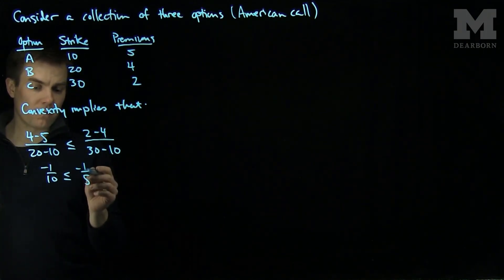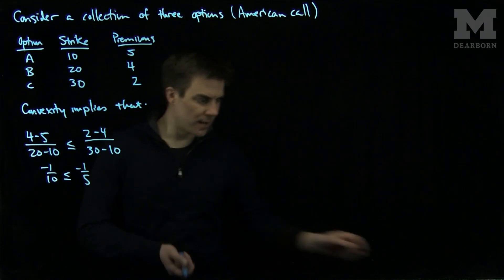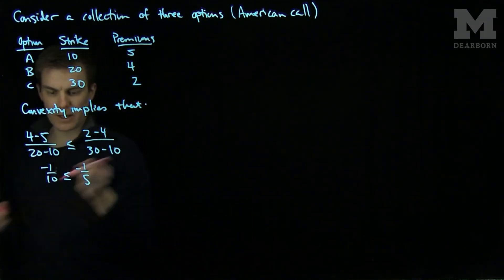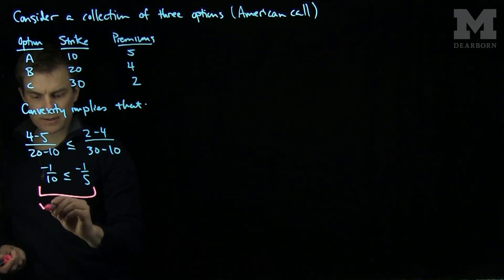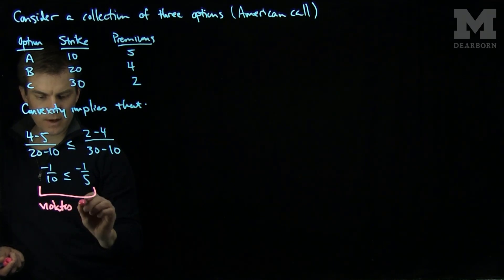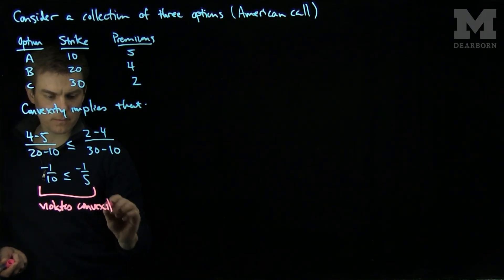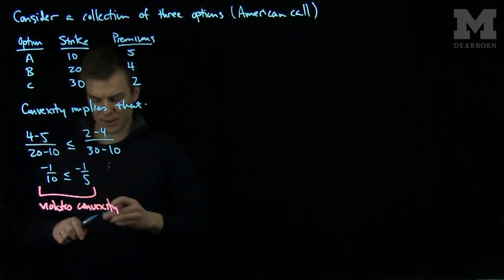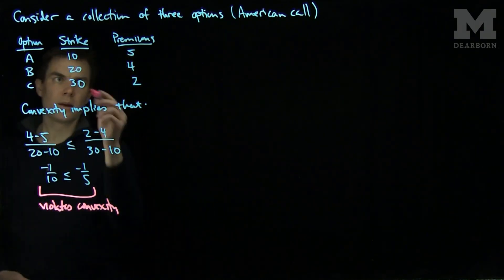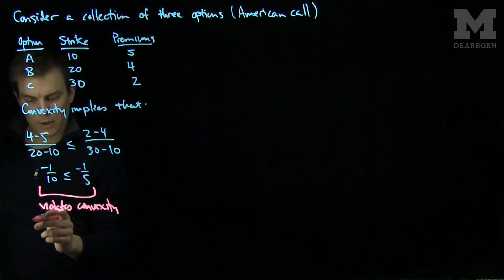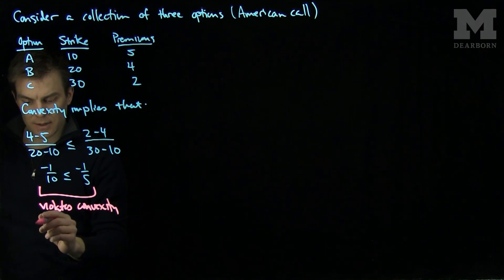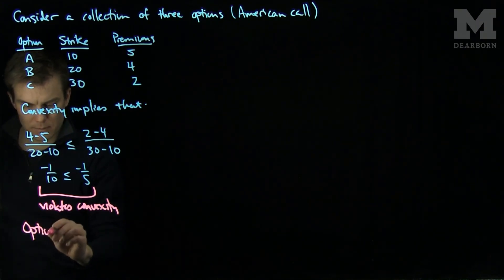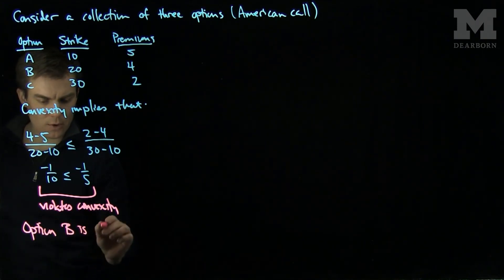But we know that negative 1/5 is less than negative 1/10. So this is a violation. This violates convexity. And what this tells us, automatically by the fact that the convex function works in this form, is that option B is overpriced.